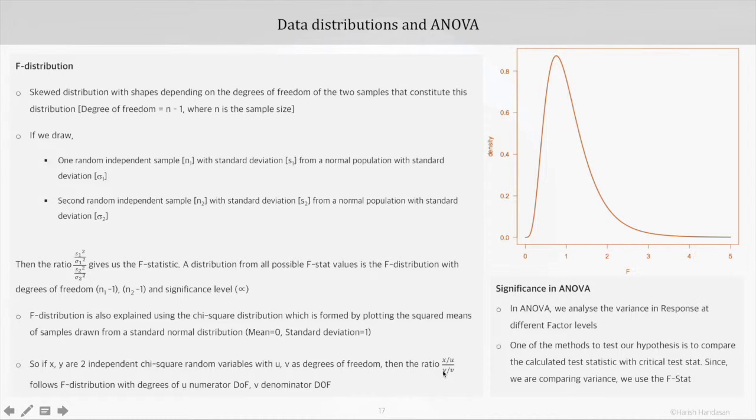Now in ANOVA, since we analyze the variance in response at different factor levels, we test our hypothesis by comparing the calculated test statistic with critical distribution parameter. Since we are comparing variance, we use F-stat and hence F distribution, and knowledge about it becomes important.